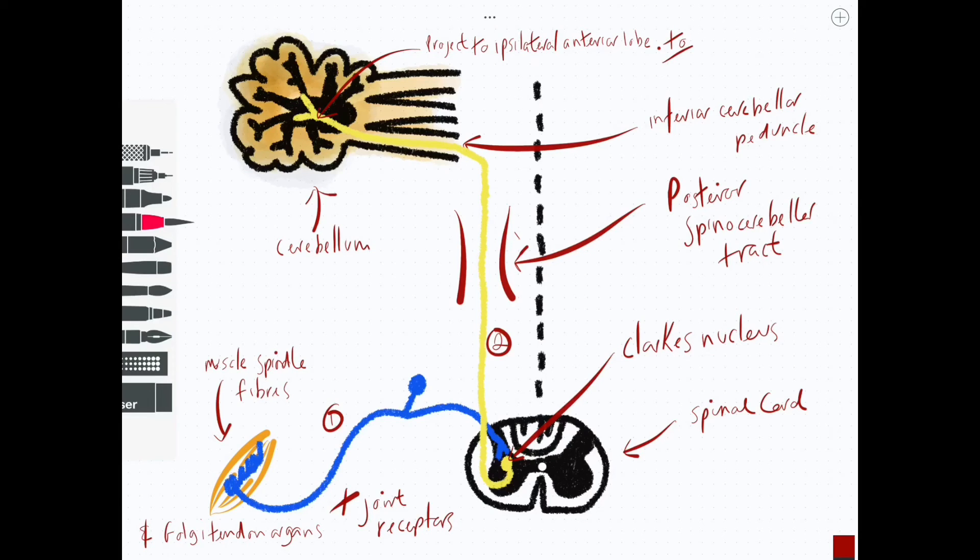The main difference in terms of function is that the anterior spinocerebellar tract is much more involved in receiving information from descending motor tracts. So it tends to come into the spinal cord and synapse onto anterior horn cells, the lower motor neurons there, rather than synapsing in the posterior horn cells which are entirely sensory like the posterior cerebellar tract does. So the main role of the anterior spinocerebellar tract is in movement, using that proprioceptive information to inform movement by synapsing with those lower motor neurons.